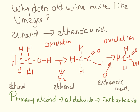Some of the chemistry here is a touch beyond GCSE, but if you're interested in top grades or A-level, you need to follow this. Ethanol is a primary alcohol. It is oxidised to an aldehyde — ethanal — which is then further oxidised to a carboxylic acid. What happens is ethanol loses two hydrogens to become ethanal, which then gains an oxygen to become ethanoic acid.